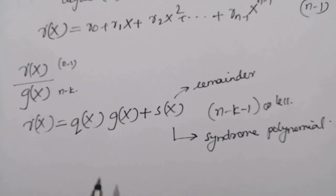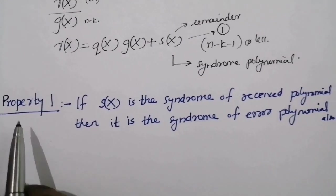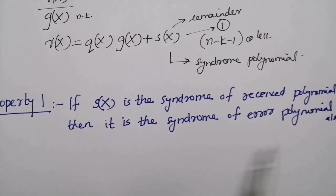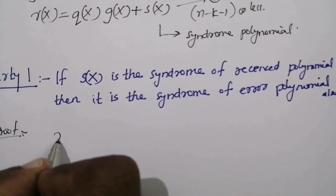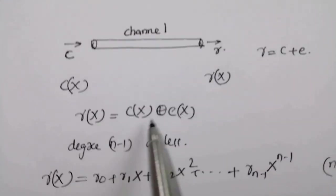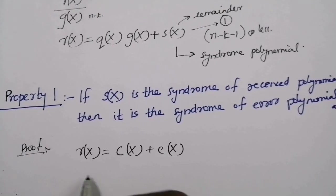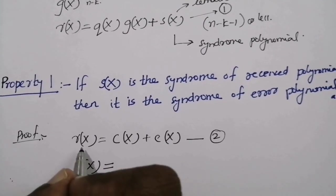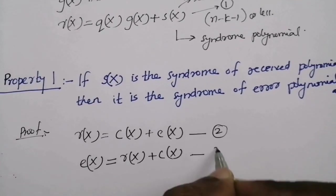The syndrome polynomial has the following interesting properties. This is equation number one. Property number one: if s(x) is the syndrome of received polynomial r(x), then it is also the syndrome of the error polynomial e(x). Proof: We know that r(x) equal to c(x) plus e(x), so e(x) can be written as r(x) minus c(x), and since this is XOR addition, it equals r(x) plus c(x). This is equation number three.